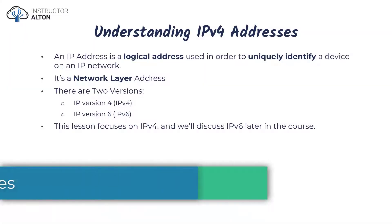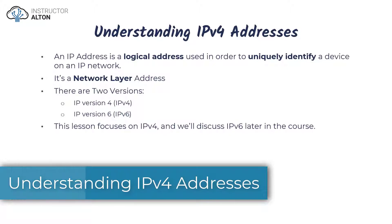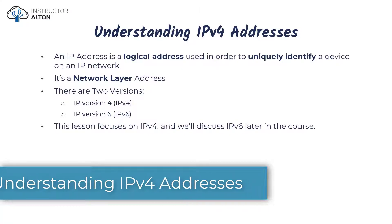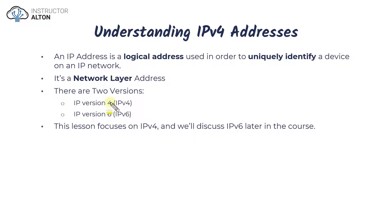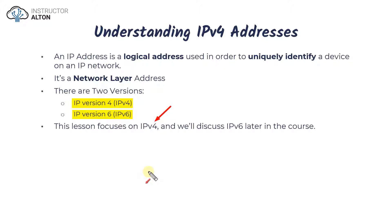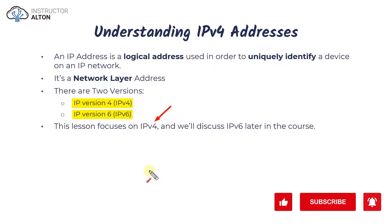We're ready to start taking a deeper dive look at IP addressing. We're going to start off looking at IP version 4 and also IP version 6, but a majority of our time is going to be spent on IP version 4. Even though IPv6 has been around for quite some time, IPv4 still seems to be fairly dominant within a lot of local area networks.